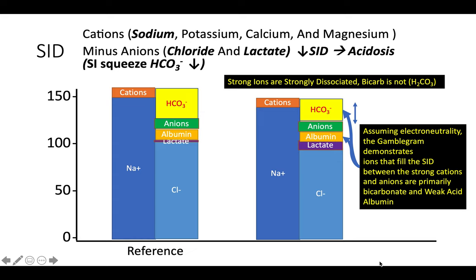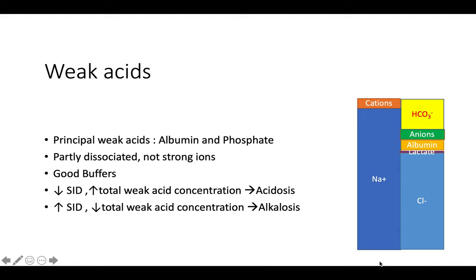A decrease in the strong ion difference leads to a reduction in bicarbonate levels, causing acidosis. Weak acids, principally albumin and phosphate, dissociate only partially, so they are not strong ions, but they are good buffers. Albumin has lots of negative charges and can hold cations such as hydrogen ions. A decrease in strong ion difference increases total weak acid concentration causing acidosis, whereas an increase in SID decreases weak acid concentration, leading to alkalosis.